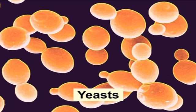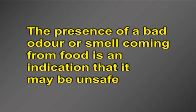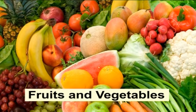Coming to the first part, which is food spoilage. Spoilage is caused by microorganisms like fungi — i.e. molds and yeast — and bacteria. They spoil food by growing in it and producing substances that change the colour, texture and odour of the food. Eventually the food will be unfit for human consumption. Food spoilage directly affects the colour, taste, odour and consistency or texture of food, and it may become dangerous to eat. The presence of a bad odour or smell coming from food is an indication that it may be unsafe. Spoilage bacteria can cause fruits and vegetables to get mushy or slimy, or meat to develop a bad odour.